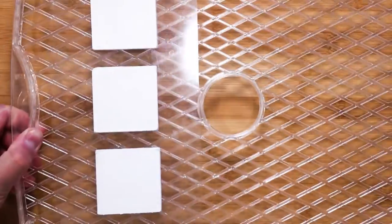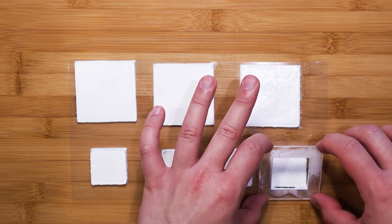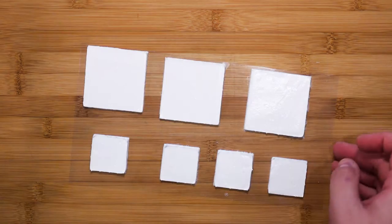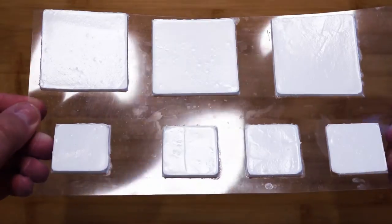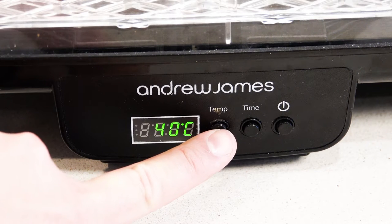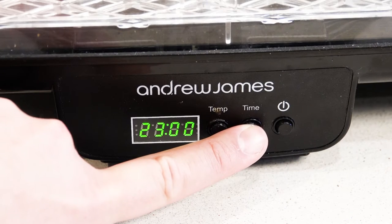There you go, this is one sheet done. So this is one size. I will be doing another size as well. After you have done as many as you want, set the temperature for your dehydrator at 70 degrees for 24 hours.